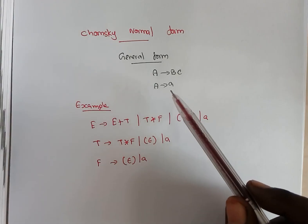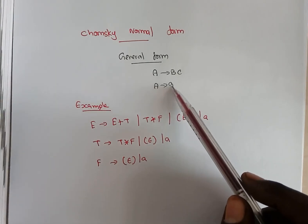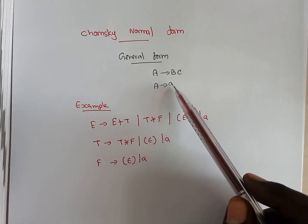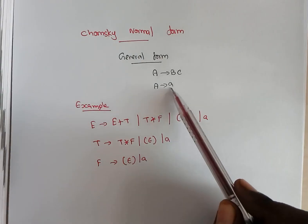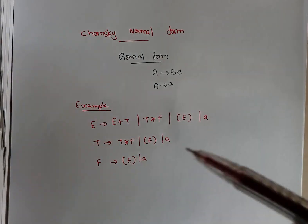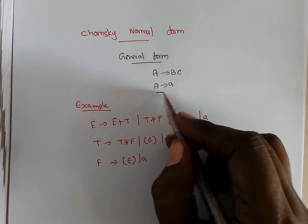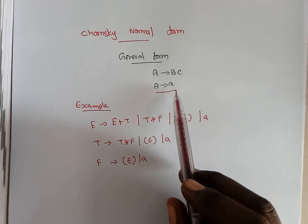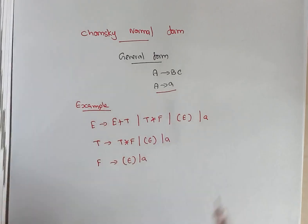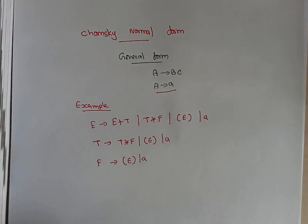The first step is: for all the terminal symbols, we have a production called a tends to a. Whenever you have a single terminal symbol, it has to be represented with a variable. So the first step is to list out all the terminal symbols and assign a variable for each.